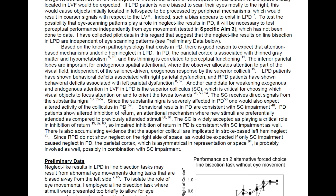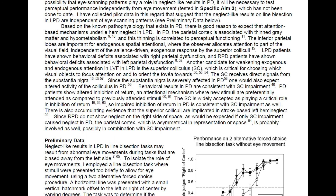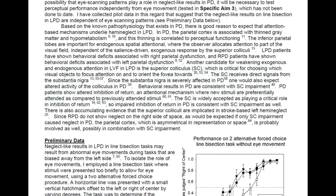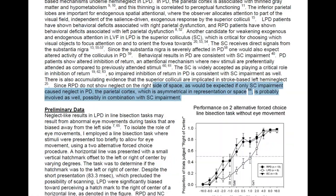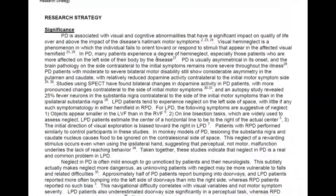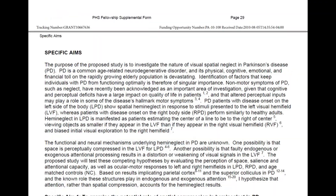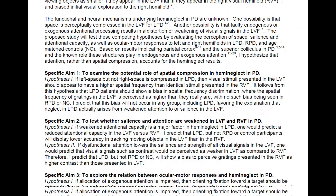I then say that based on what we know about the brain, mechanisms underlying neglect in left-onset PD give good reason to think attention is going to be the key reason. I talk about brain areas affected in Parkinson's disease and why we would think those affect attention and then cause neglect. So it's nothing too crazy or new from what I said in the specific aims — it's just a lot more detail fleshed out.